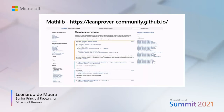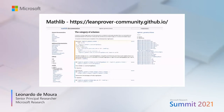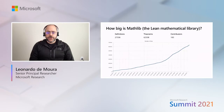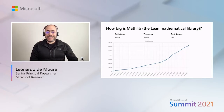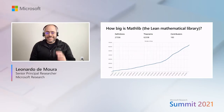Mathlib is not just important for math, but also for software verification. Suppose you are a software developer building the next generation crypto library. Number theory is essential. If you want to prove properties about your new algorithm, you can use Mathlib because it has many theories about number theory that can be reused. The Mathlib project started in 2017 and is growing rapidly. Today we have more than 27,000 definitions, 60,000 theorems, and almost 200 contributors. More than 600,000 lines of code have been written in Mathlib.